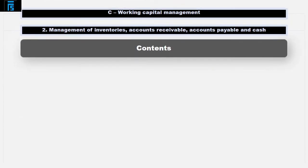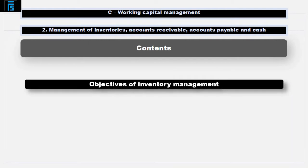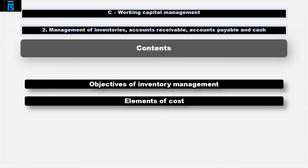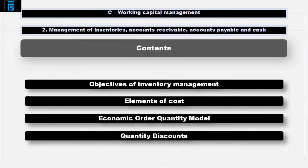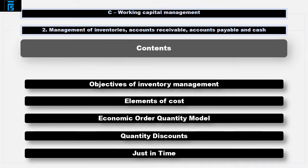Specifically, this presentation will cover the objectives of inventory management, elements of cost, the economic order quantity model, quantity discounts, and just-in-time. Let's now look at each of these in turn.